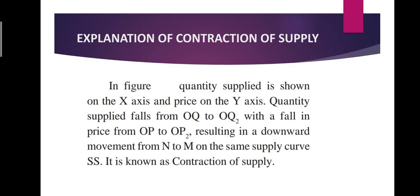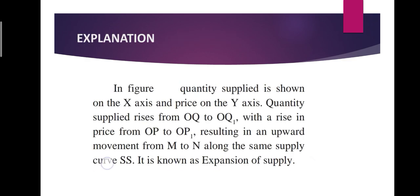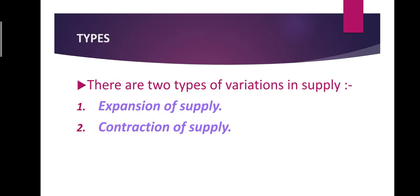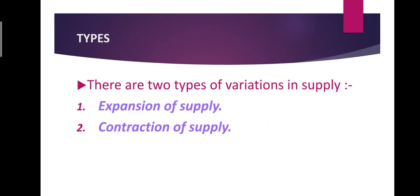So under variation of supply we covered two points. In variations in supply, the condition is that other factors remain constant and only price varies — the effect of that is called variation in supply. Variation in supply is of two types: one is expansion of supply and the other is contraction of supply.